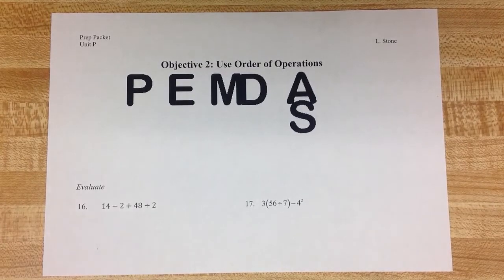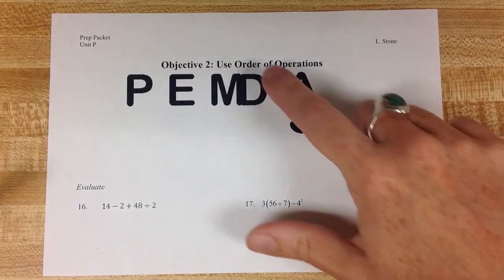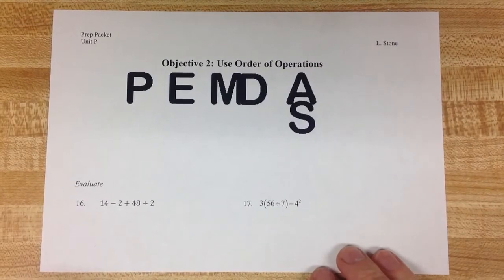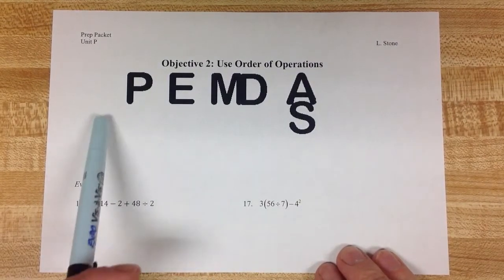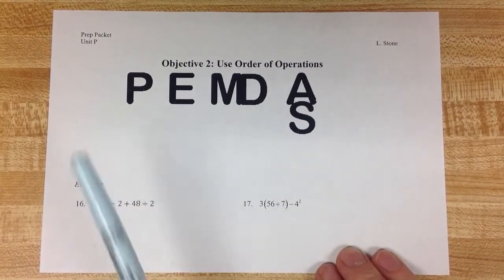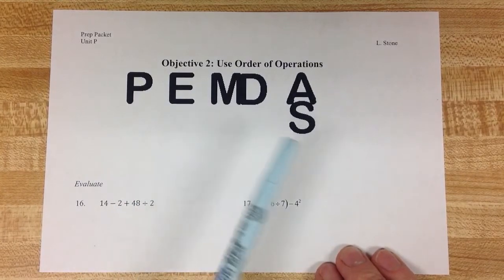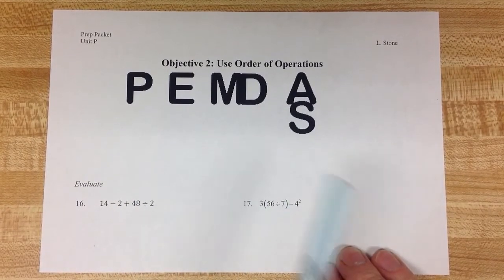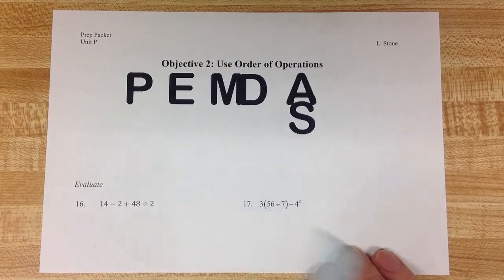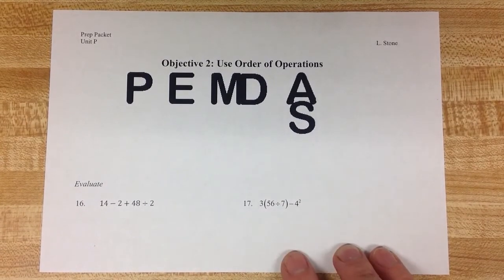The second objective for this section is the order of operations. Some of you may remember this being referred to as the word PEMDAS, or maybe even the sentence, Please excuse my dear Aunt Sally. As you can see, when I write PEMDAS, I write it a little bit differently, and I want to show you why I do that.